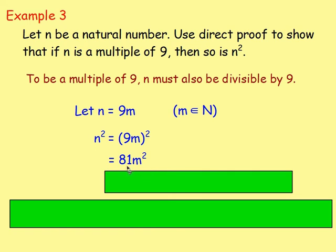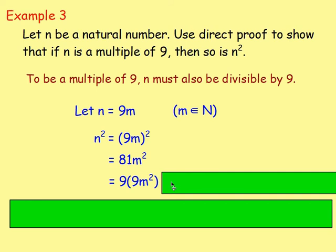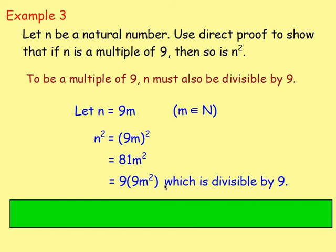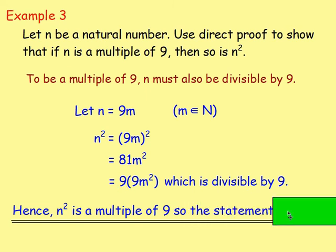We want to show that 81M squared is a multiple of 9. We have to write it in the form of 9 times something, so we take out a factor of 9. That means 81M squared equals 9 times 9M squared. Because we have 9 times something, we know it's divisible by 9. Therefore we have proved the statement is true — N squared is a multiple of 9.